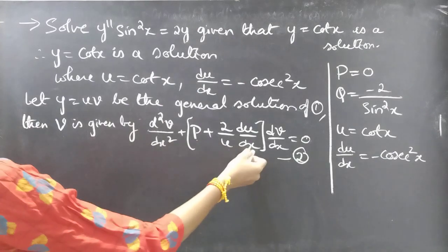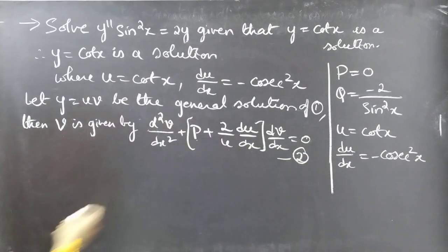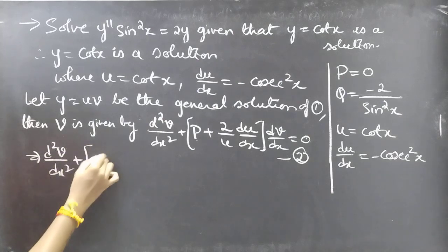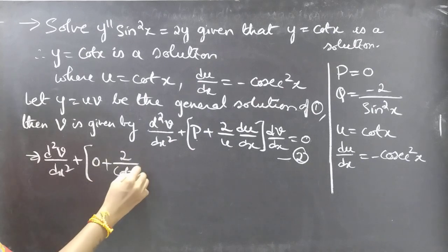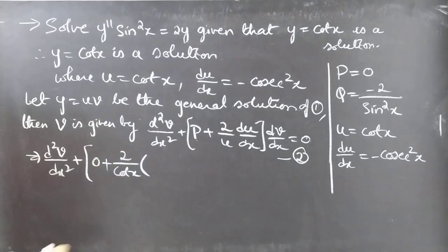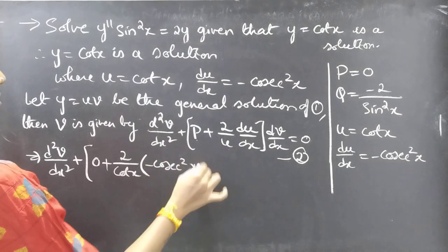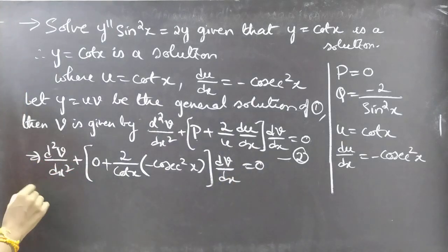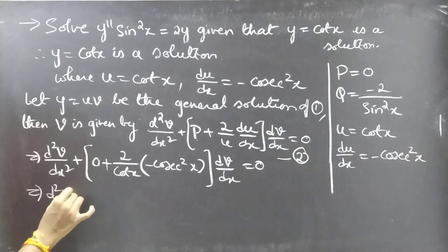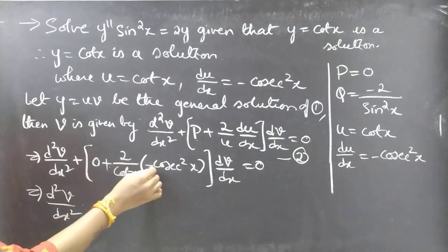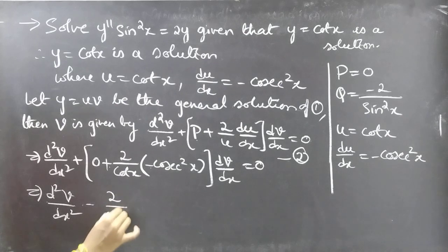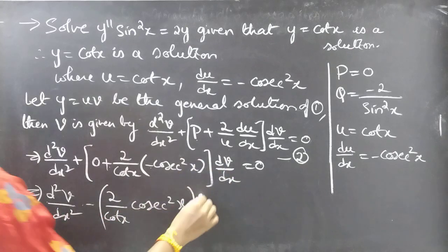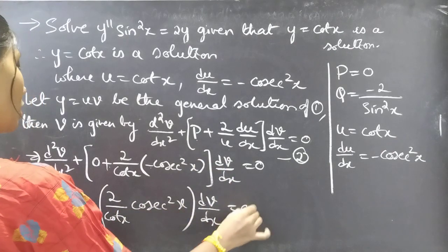Now substitute P = 0, u = cot x, and du/dx = −cosec²x into the equation. We get: d²v/dx² + (0 + (2/cot x)·(−cosec²x))·(dv/dx) = 0, which simplifies to d²v/dx² − (2cosec²x / cot x)·(dv/dx) = 0.